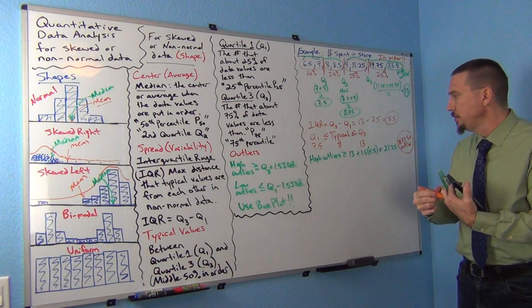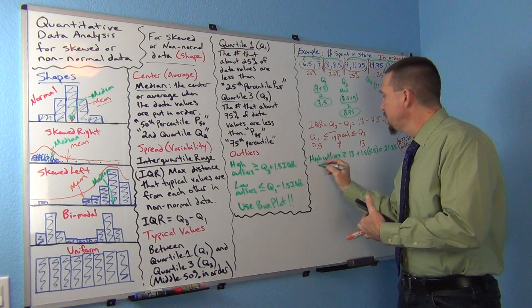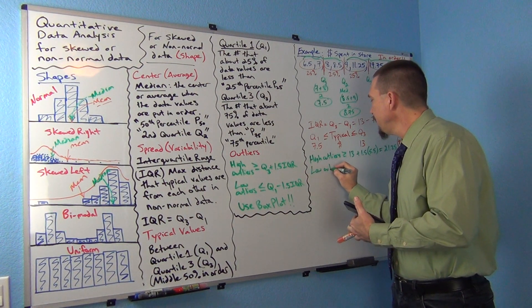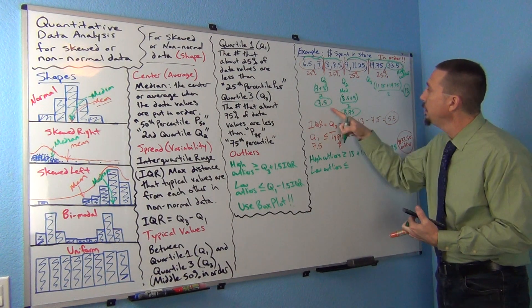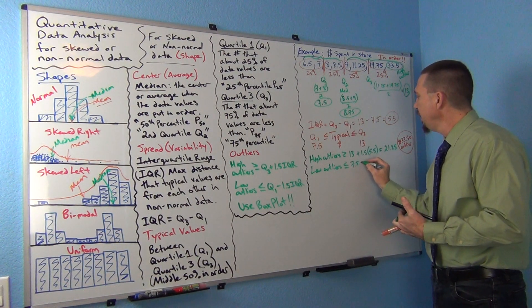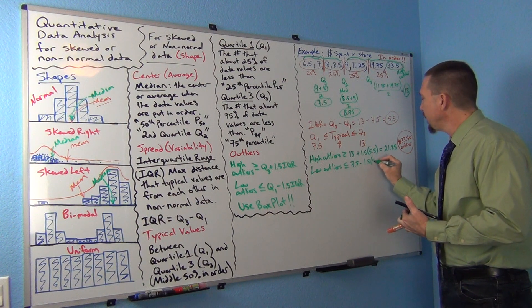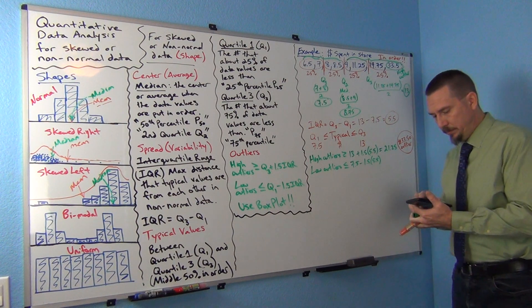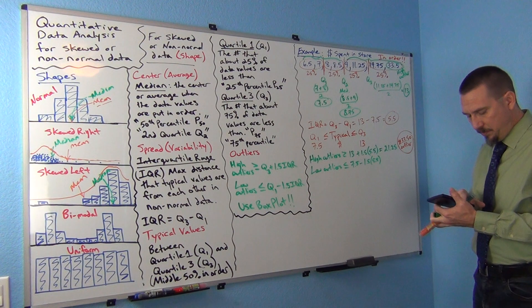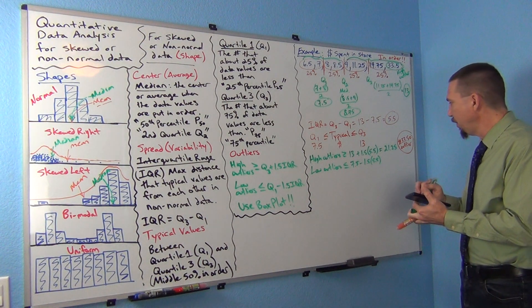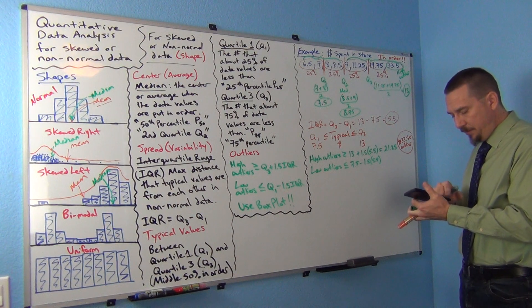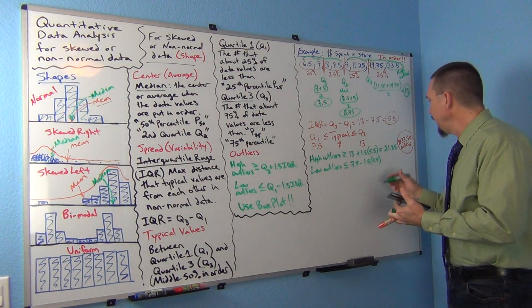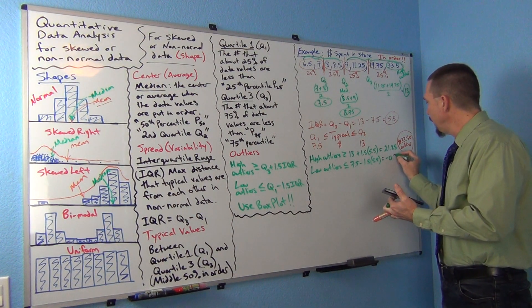Now what about low outliers? So with low outliers, we said the formula for anything less than or equal to quartile 1, 7.5, minus 1.5 times 5.5. Again, 1.5 times 5.5 gives us 8.25. Subtract that from 7.5, and we get negative 0.75.